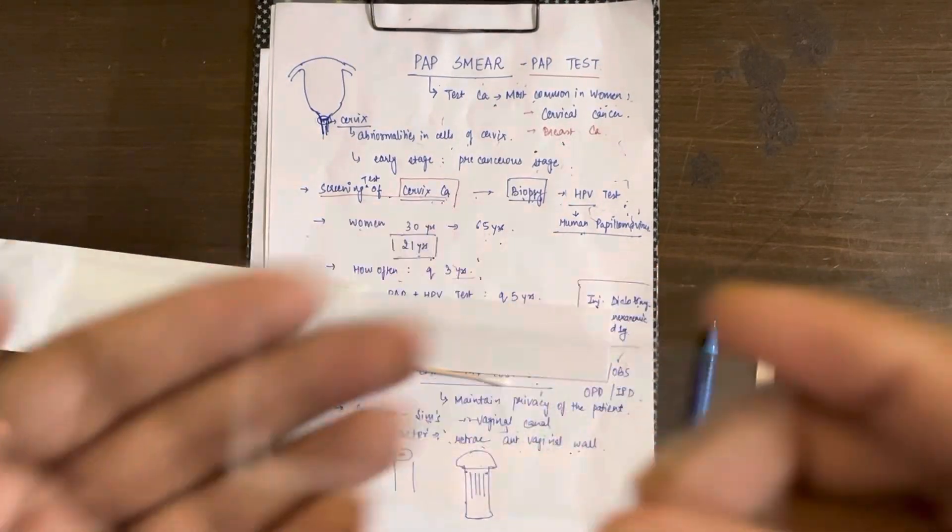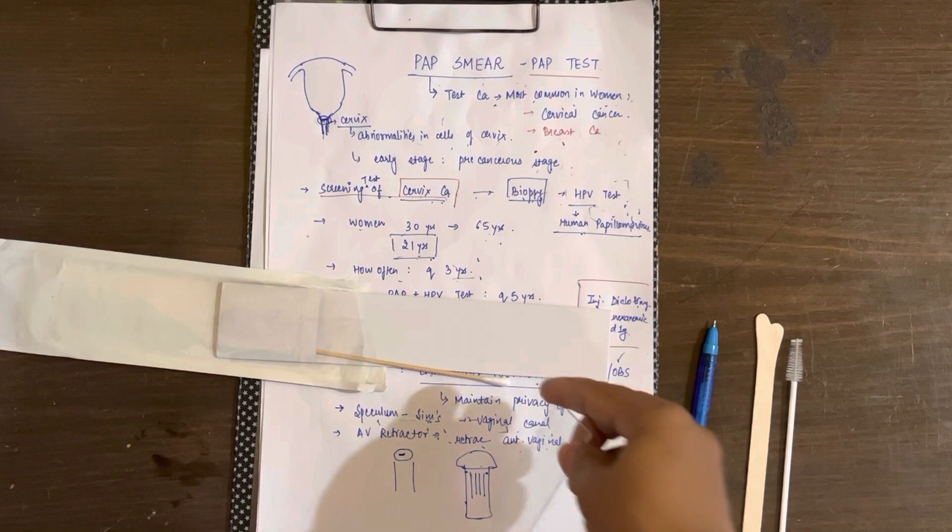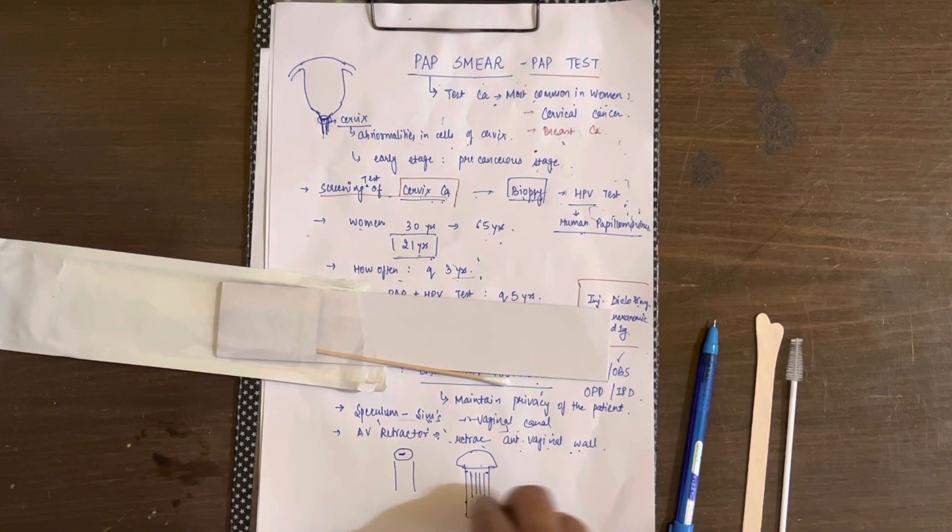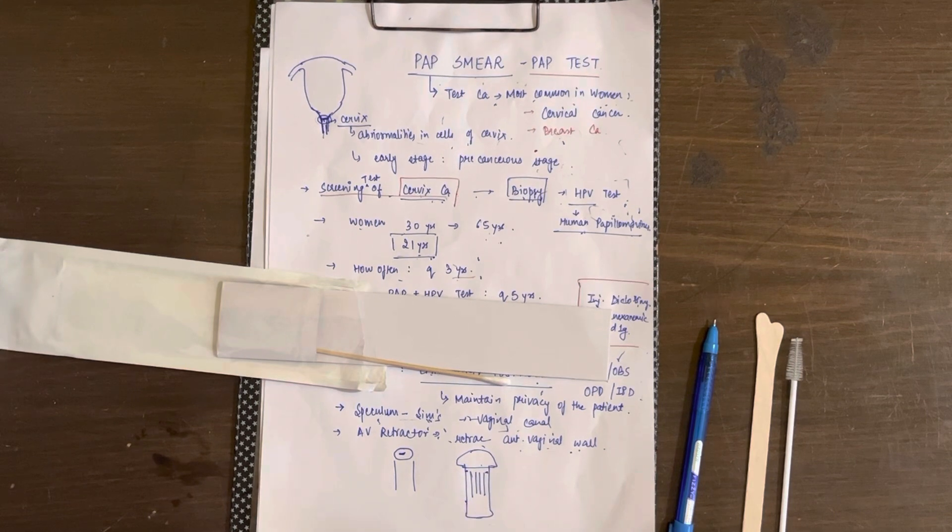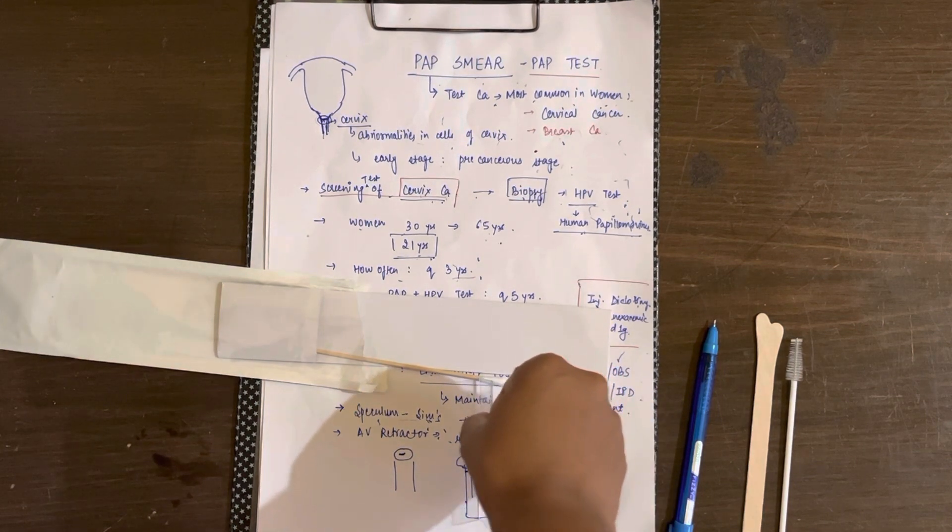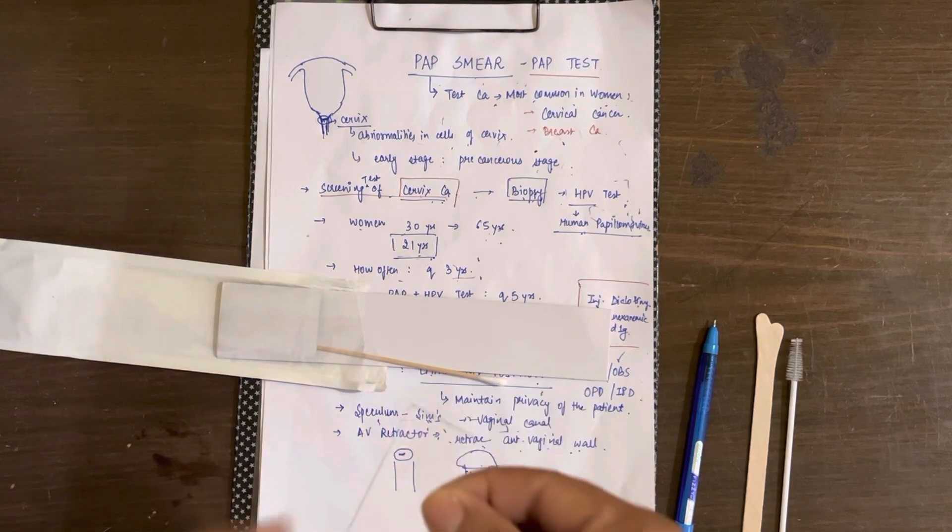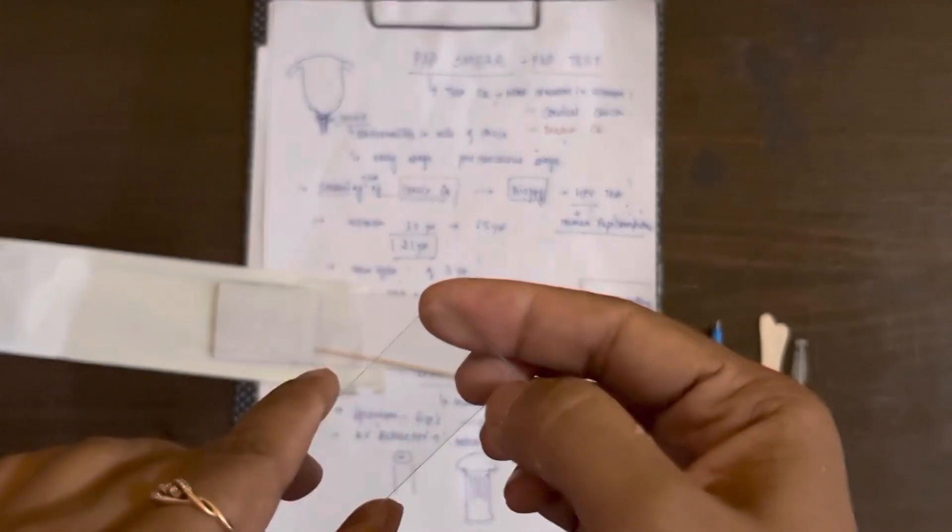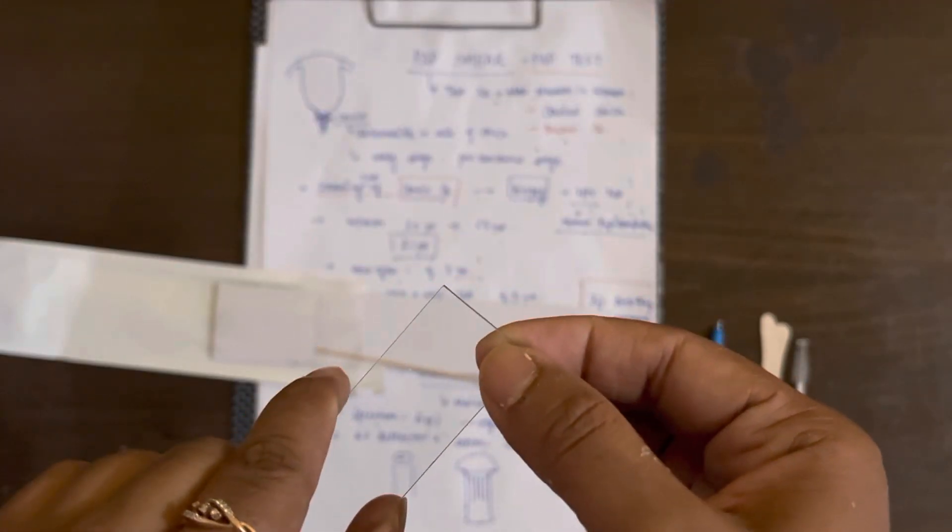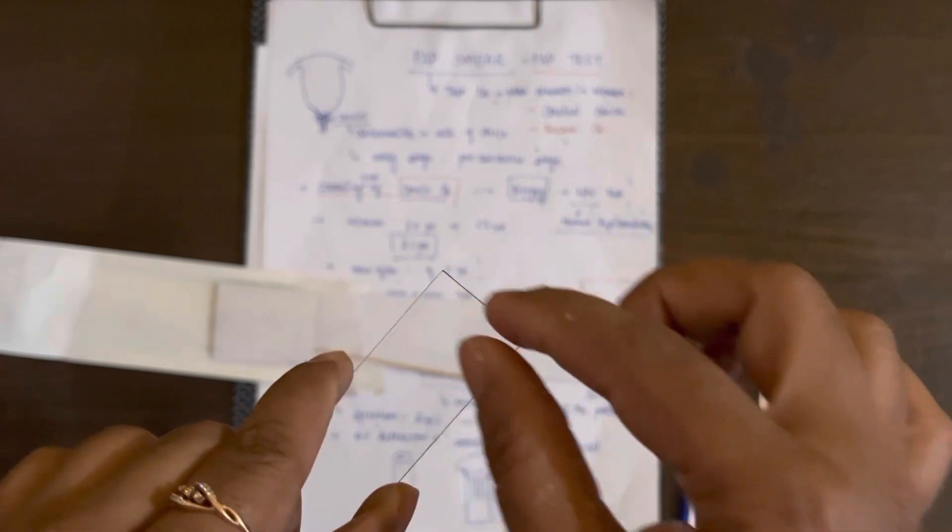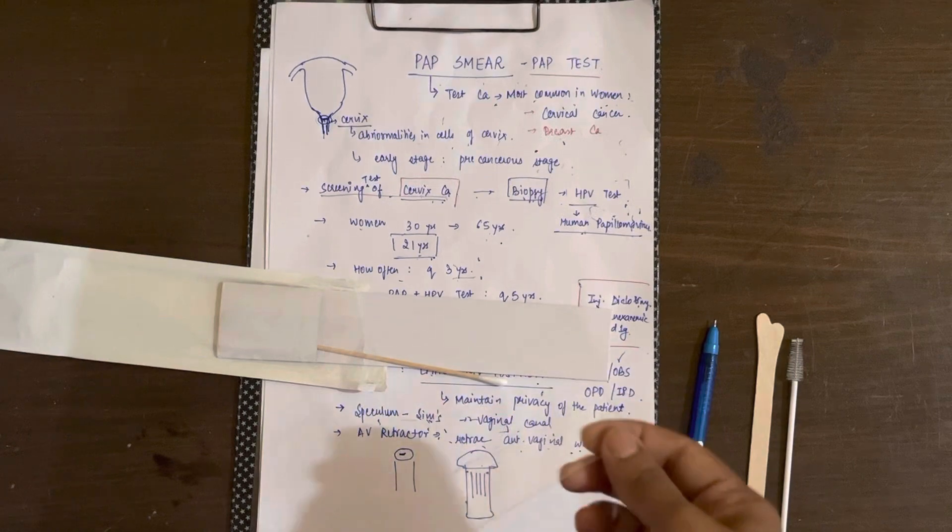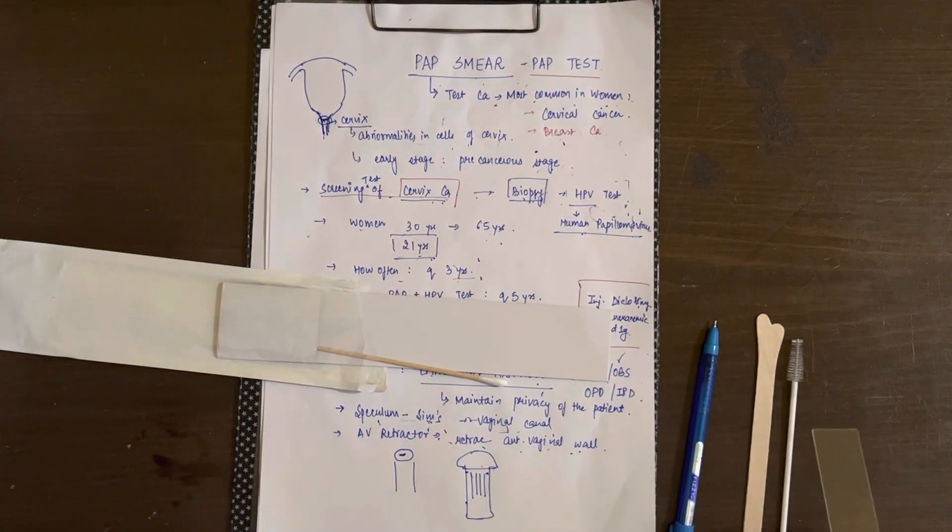When you use both the IRS spatula and the brush, you have to put this slide into the Coplic jar. This is how the Coplic jar looks, it has five compartments in which you can slide one of these slides. Before sliding, you have to name the slide with your patient's identification number or name, whatever is the unique identification number, then put it into the Coplic jar. This is how you take the Pap smear.